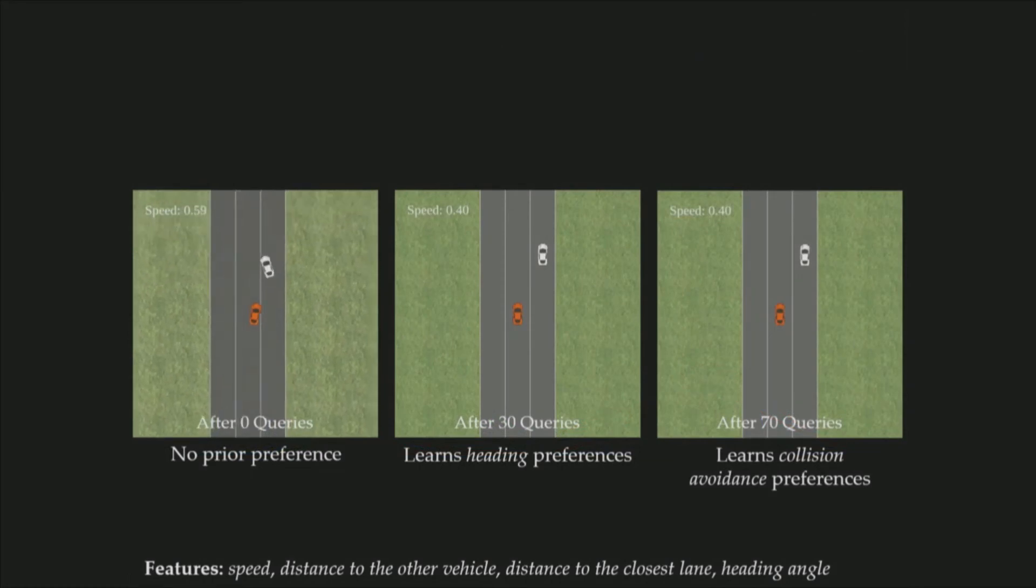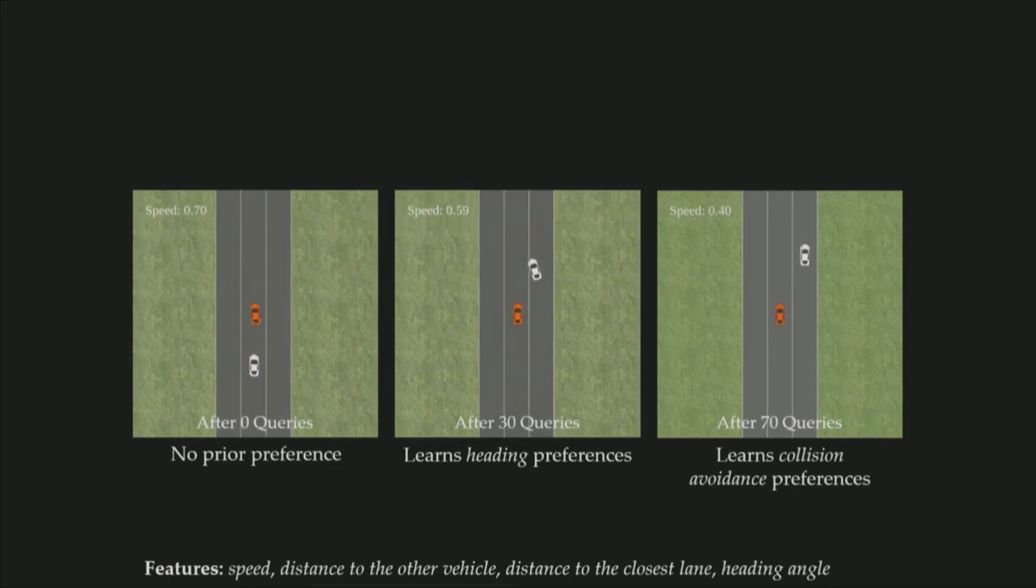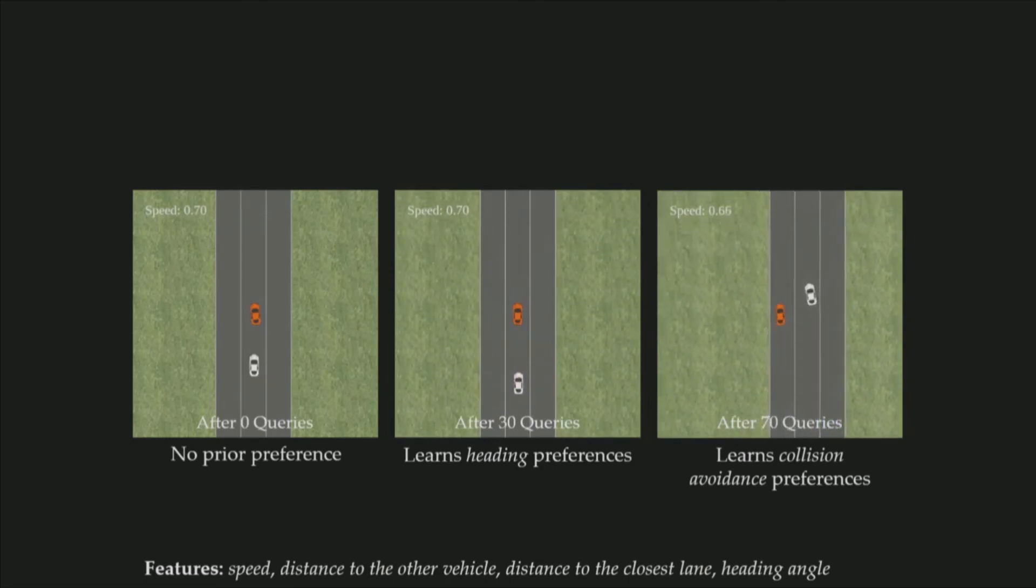And here I'm visualizing the trajectories that were optimized with the reward functions learned after some number of queries. As you can see in the first video, without any prior information, the car is basically taking random walk when the robot is controlling the steering. But after 30 queries, it learns the heading preference, so it learns how to go straight. And after 70 queries, it learns how to drive. And I want to emphasize that there are no demonstrations involved here. We learned driving just by using 70 simple pairwise comparisons.